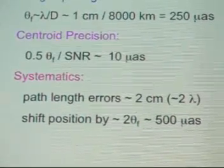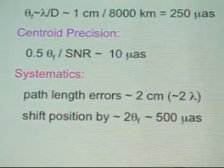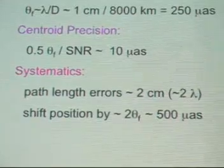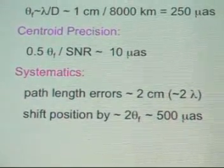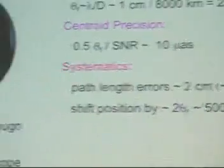One wavelength delay basically shifts your fringes and moves the position of the objects by about a fringe or about that amount. So basically the systematics that we have right now limit us to measurements of about 500 microarcseconds, half a milliarcsecond, in an absolute sense.